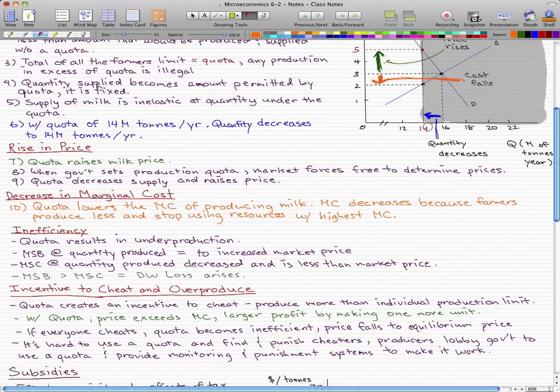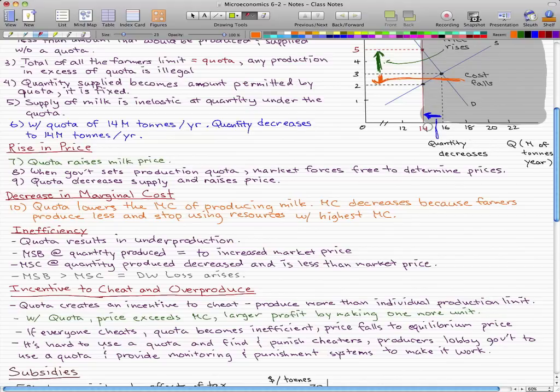Now there's an incentive to cheat and overproduce for the farmers. The quota creates an incentive to cheat. If a producer produces more than the individual production limit, the price exceeds marginal cost. So if the farmers produce more than their individual limit, then they make a larger profit by making one more unit. So if everyone cheats, then the quota becomes totally inefficient and useless again. The price falls back to equilibrium price.